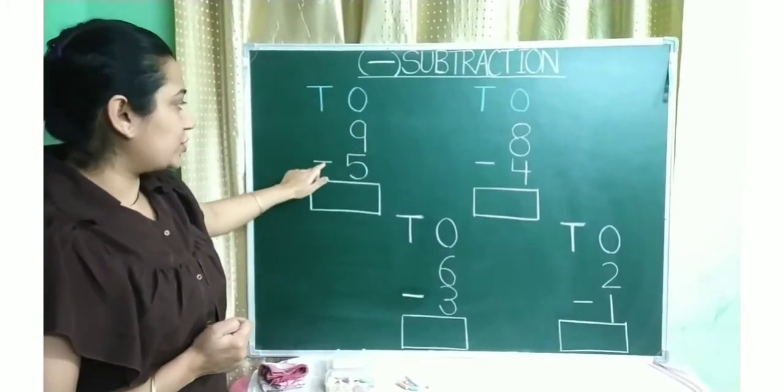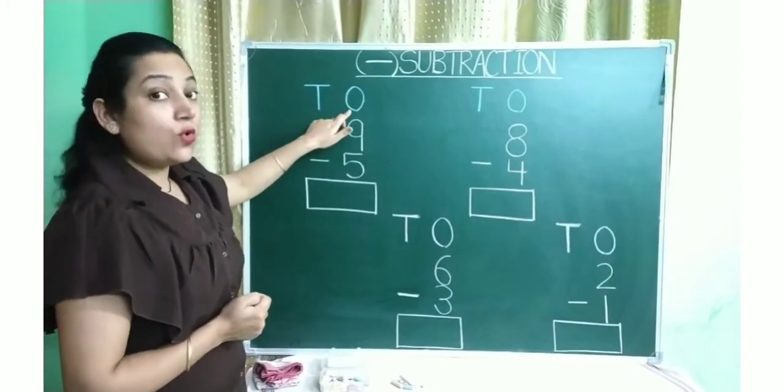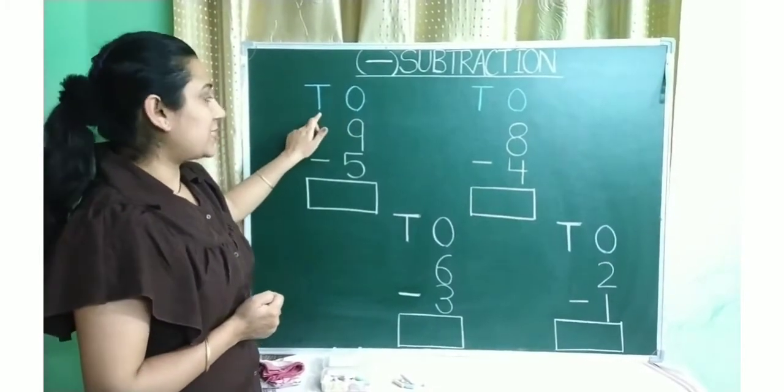Which is the sign of subtraction? This. One slipping line. Yes. So this is O. O stands for 1. D stands for 10.